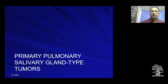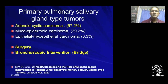This entity — primary pulmonary salivary gland tumors — is very rare and distinct. Just like other major salivary gland tumors, you have adenoid cystic carcinomas, mucoepidermoid carcinomas, and epithelial myoepithelial carcinomas, in that order. Surgery is the predominant form of treatment; there is hardly any role for adjuvant treatment, especially for low-grade ones. With the growth of interventional pulmonology, there is also scope for bronchoscopic debulking or using it as a bridge to parenchymal-sparing resections.